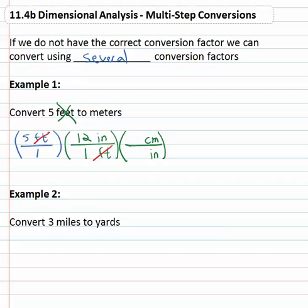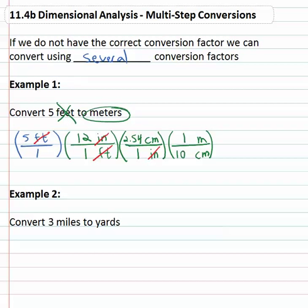Inches go to the denominator so they divide out, and we might be able to convert into the metric unit centimeter. Looking up that conversion we see that one inch is 2.54 centimeters. Now the inches divide out, but the problem is we don't want centimeters either — we want meters. So we need to get rid of the centimeters with another conversion factor. To get rid of the centimeters we put them in the denominator, one on top and one on the bottom. We want those centimeters to ultimately become meters, and we know one meter is one hundred centimeters. Centimeters divide out and we finally have the units we want.